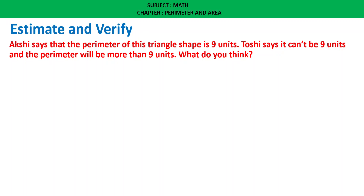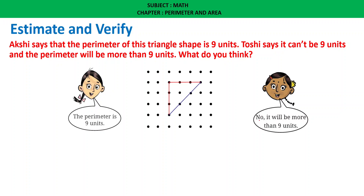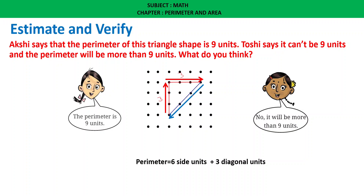Estimate and verify: Akshi says the perimeter of this triangle shape is 9 units. Toshi says it cannot be 9 units and the perimeter will be more than 9 units. It will be more than 9 units because some sides are straight units and one side is diagonal. We have to consider the perimeter as 6 side units plus 3 diagonal units.